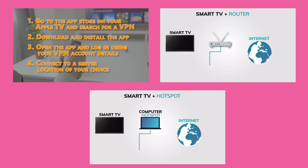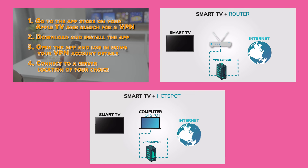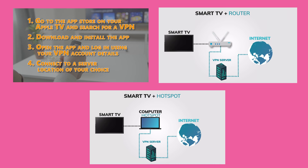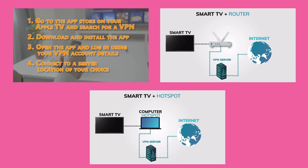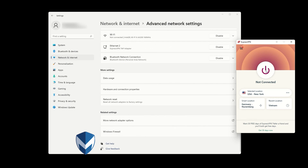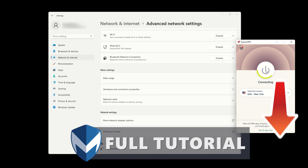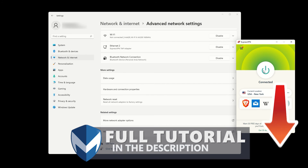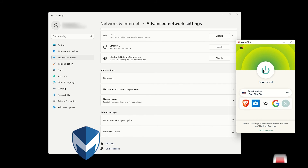Now you know three different methods for using a VPN on your Apple TV. Whether you install a VPN directly on your smart TV, install it on your router, or share your VPN connection through a hotspot, you can enjoy a more private and secure streaming experience. If you need any help with installing a VPN on your Apple TV, check out additional tutorials in the description below.